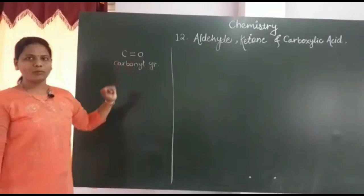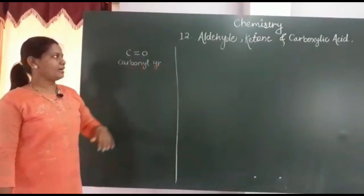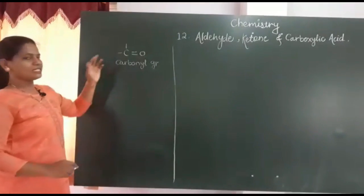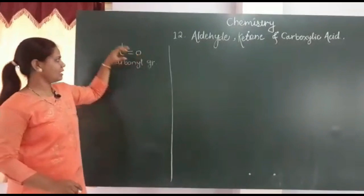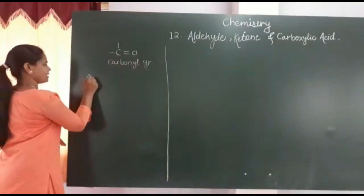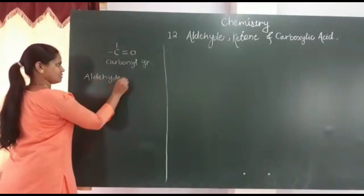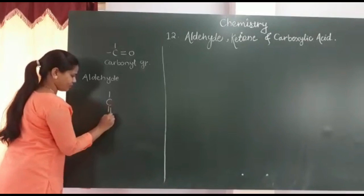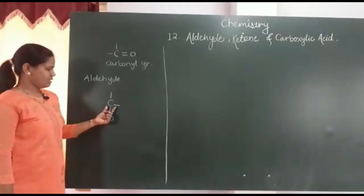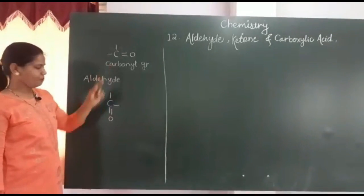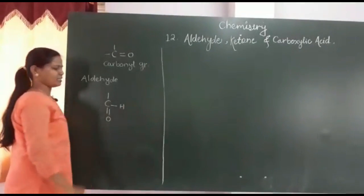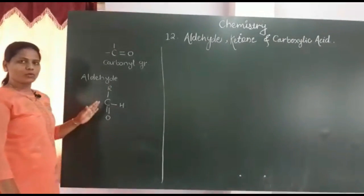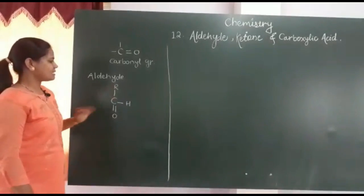Now let's see how the carbonyl group is classified into aldehyde, ketone, and carboxylic acid. Carbon's valency is four — two valencies are already satisfied with the oxygen. The remaining two valencies: in aldehyde, one valency is compulsorily satisfied with a hydrogen atom, and the remaining one valency is satisfied with an alkyl group or aryl group. This is called the aldehydic or formyl carbonyl group.